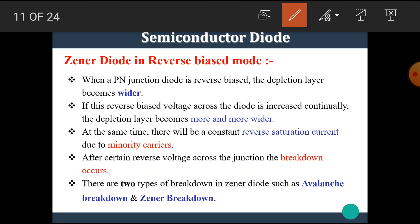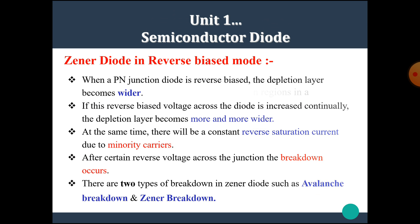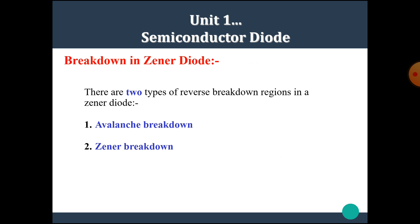Let's see the operation of the Zener diode in reverse bias mode. When the PN junction is reverse biased, the depletion layer becomes wider as the reverse bias voltage is increased continuously. At the same time, there is a constant reverse saturation current due to minority carriers. After a certain reverse voltage across the junction, the junction breakdown occurs. There are two types of breakdowns in the Zener diode: avalanche breakdown and Zener breakdown.